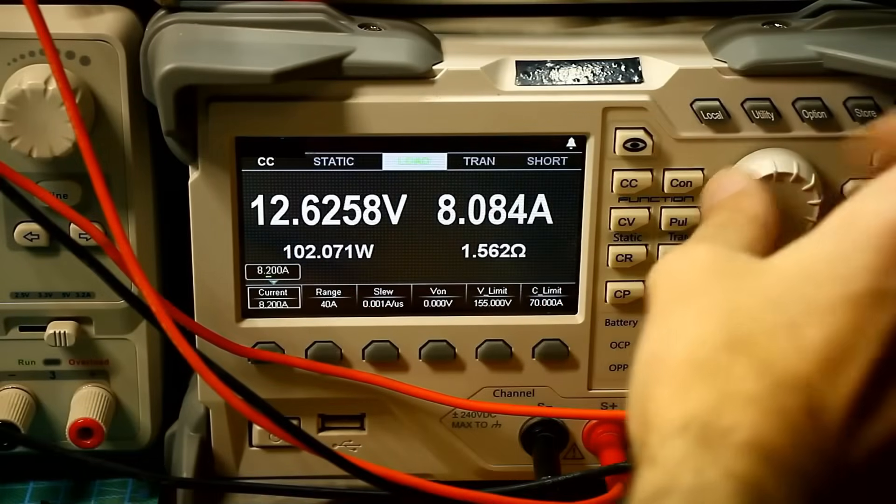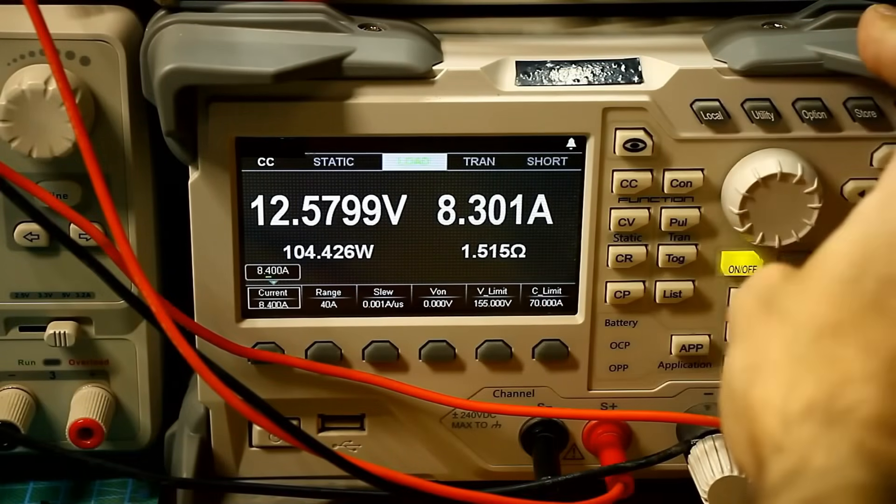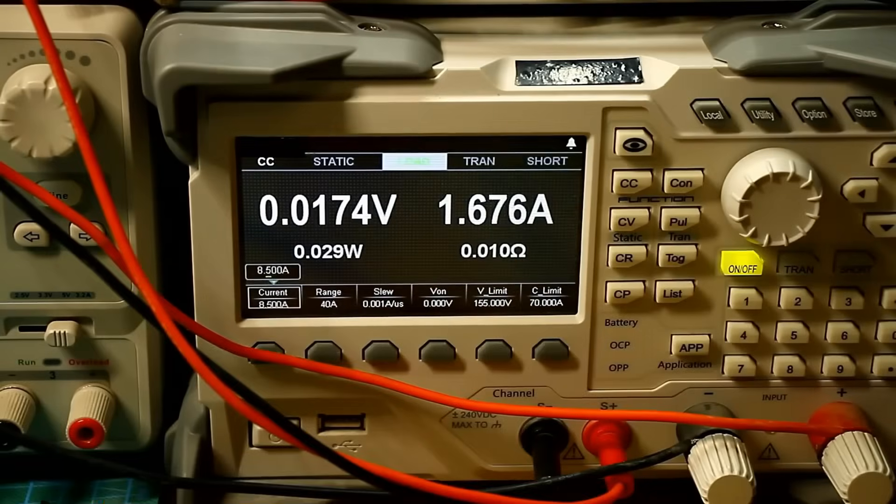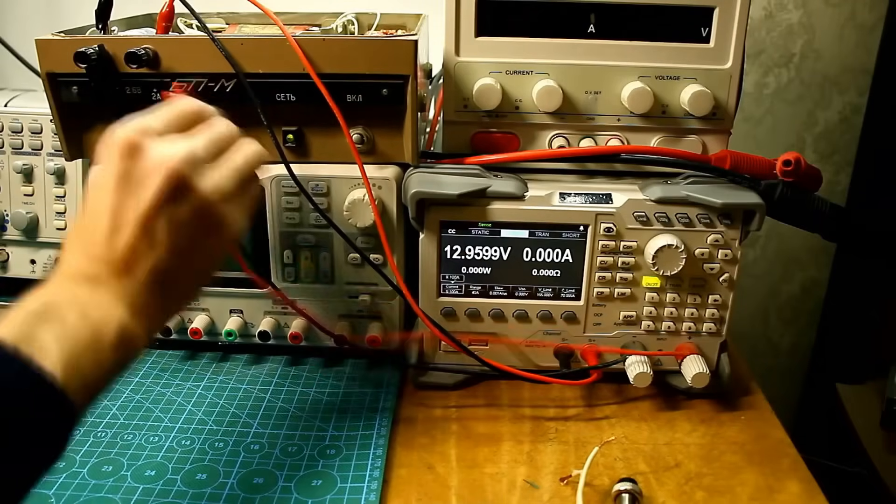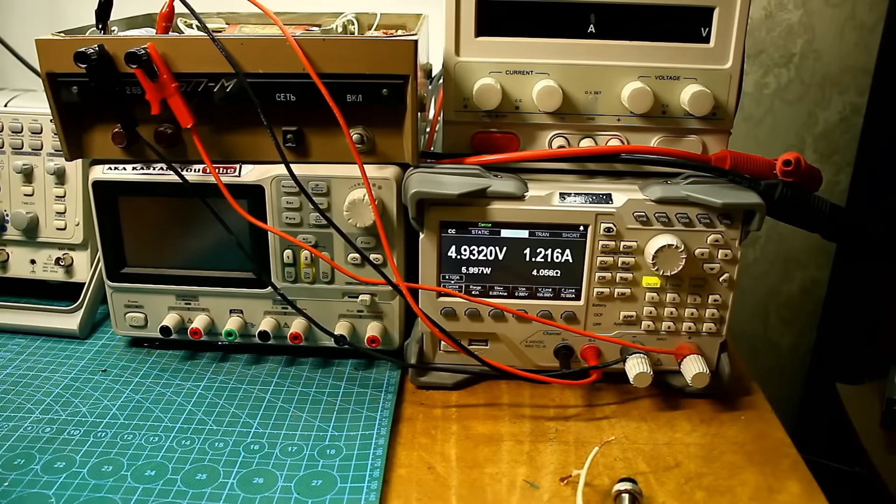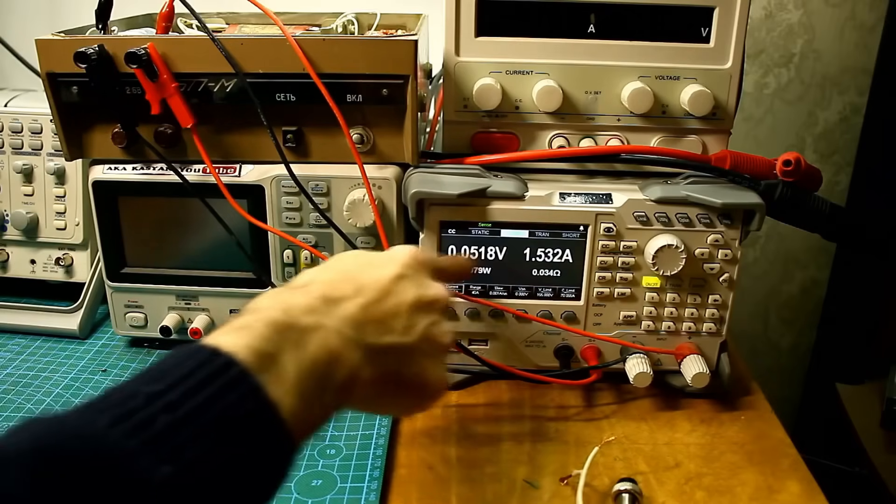When trying to draw more, the unit goes into protection mode. It also handles short circuits calmly. To be fair, I gradually increase the current. However, if you immediately load the unit with a load that consumes 2 or more amps, the unit will immediately go into protection mode.